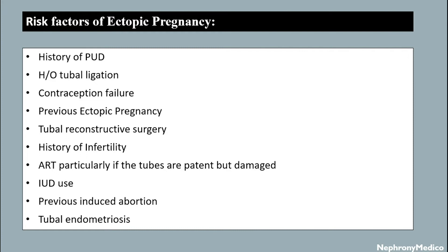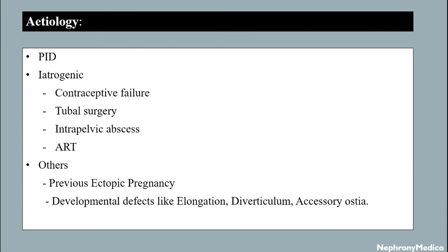Risk factors of ectopic pregnancy include history of PID, history of tubal ligation, contraception failure, previous ectopic pregnancy, tubal reconstructive surgery, history of infertility, ART particularly if tubes are patent but damaged, IUD use, previous induced abortion, and tubal endometriosis. Etiology includes pelvic inflammatory disease, iatrogenic causes like contraceptive failure, tubal surgery, intraperitoneal abscess, and ART.